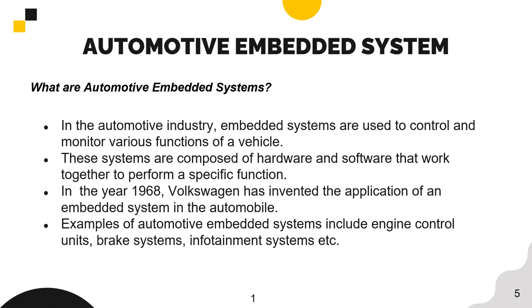In the Automotive Industry, Embedded Systems are used to control and monitor various functions of the vehicle. These systems are composed of hardware and software that work together to perform specific functions. In 1968, Volkswagen introduced the application of an embedded system in the automobile. Examples of Automotive Embedded Systems include Engine Control Unit (ECU), brake systems, and infotainment systems.